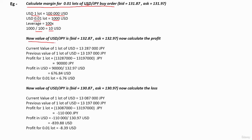Now the value of USD/JPY is this value. To calculate the profit, first we have to calculate the current value of 1 lot of USD by multiplying the current bid value by 100,000. To calculate the previous value of 1 lot of USD, we multiply the previous ask value by 100,000.